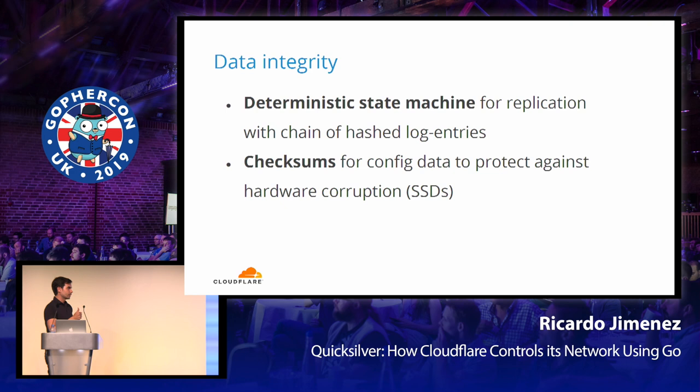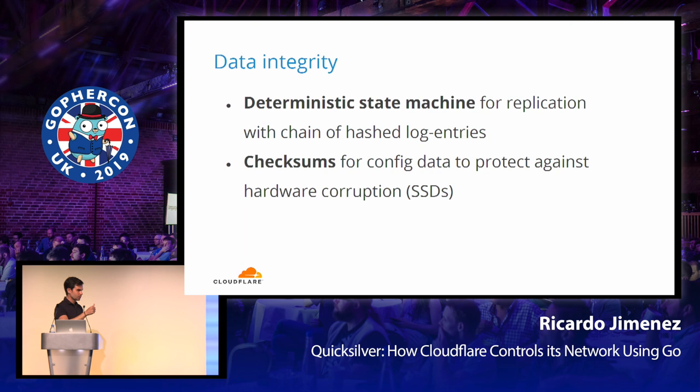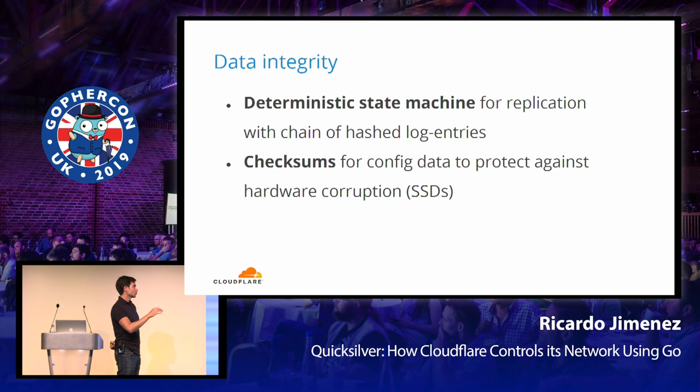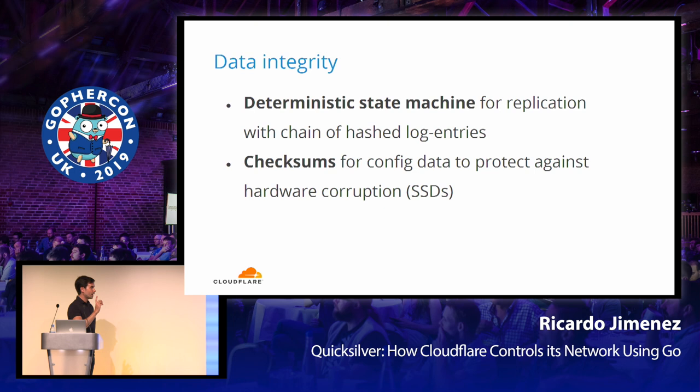For data integrity, we have a deterministic state machine controlling replication and local DB updates to ensure every single server has an exact same data set. We are also exposed to hardware failures — SSDs, when they are about to die, can return garbage. So we cover all keys and values with their own checksums, which we validate on the fly. If we detect corruption, we return an error rather than returning garbage to another software, because that could cause request mishandling.